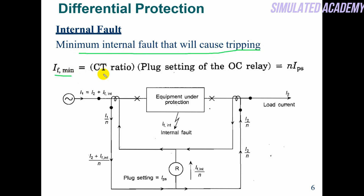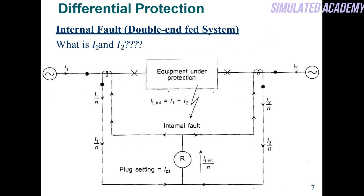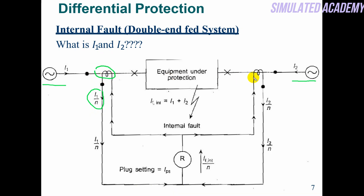How to deal with this fault — CT ratio and plug setting of the overcurrent relay. Plug setting is the value for which the relay must operate — the minimum value of current. Now if the system is fed from both sides and an internal fault occurs, i1/n from this CT and i2/n from that CT will flow, and all that current will pass through the spill coil because it is grounded. So the relay will operate again.